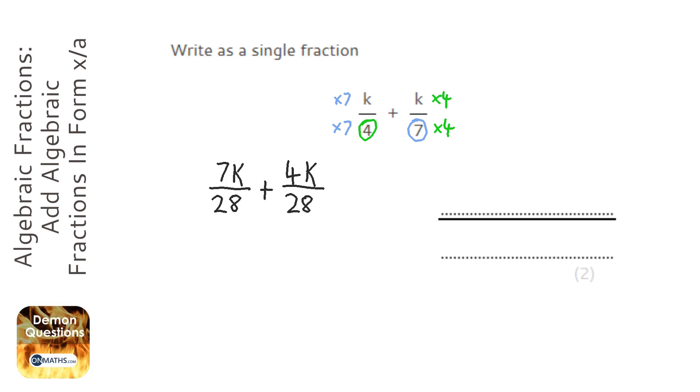Then when the bottoms are the same, you can just add the tops. Now this time it's 7k plus 4k, which is 11k, and the bottom stays the same. So the answer is 11k over 28.